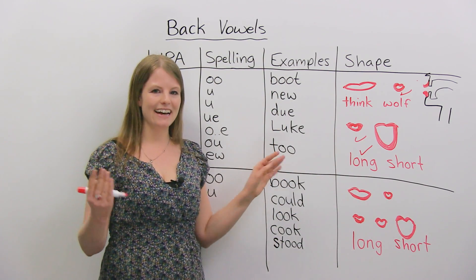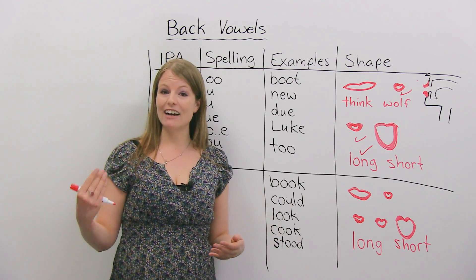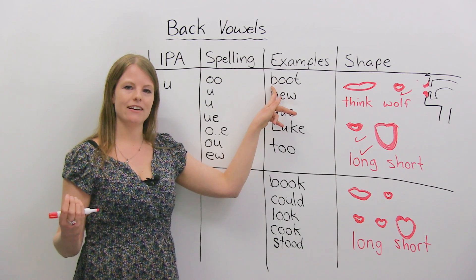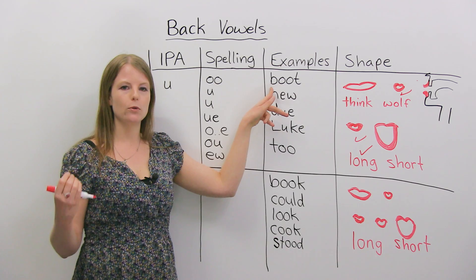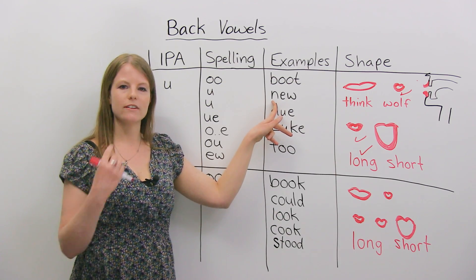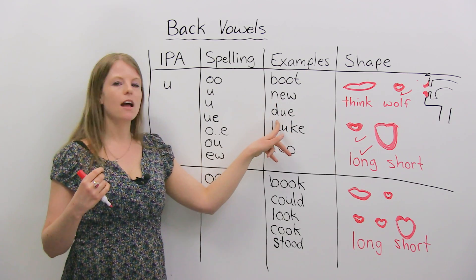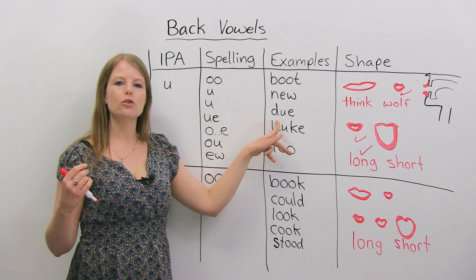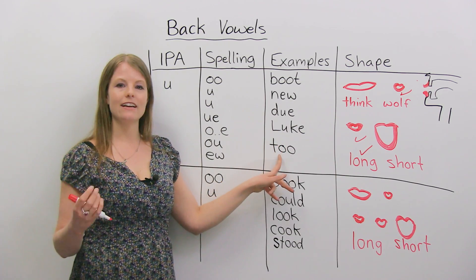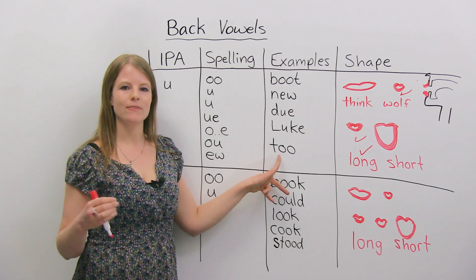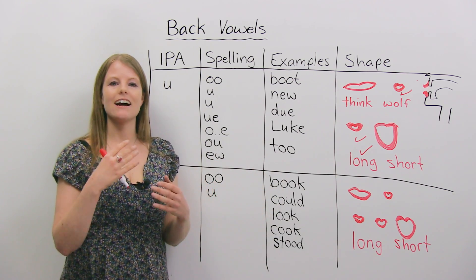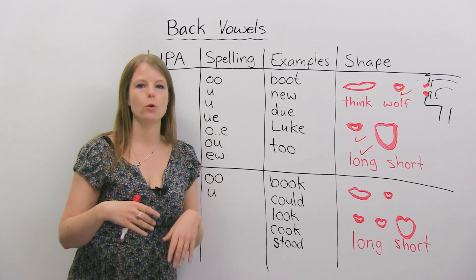Let's do some practice of the "oo" sound. Use a mirror to look at your lips and make sure you're doing it correctly. Repeat after me: boot, new, do, Luke, two, blue — like the color blue. Your lips are small but they're protruding outward — they're rounded like a wolf. Now let's compare this to another back vowel sound.